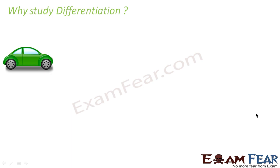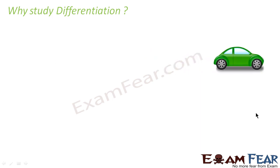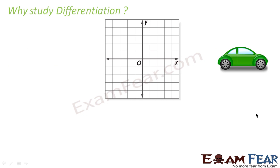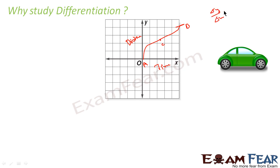One example is a car: you move in the car from point A to point B. You have a distance-time graph — distance on one axis, time on the other. Now you want to find the speed at point C. If you know differentiation, just find delta y by delta x at that point C, and this gives you the speed at point C.